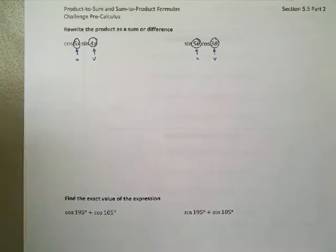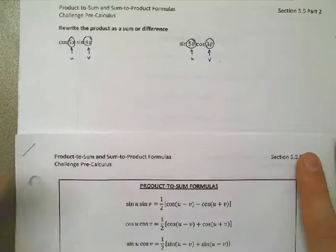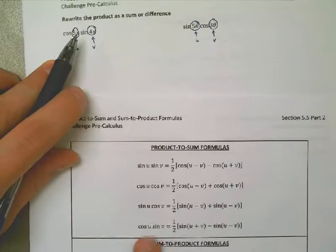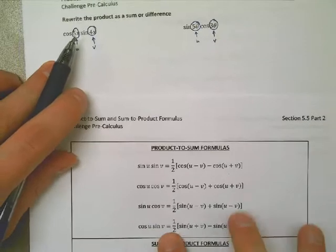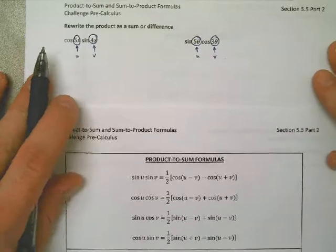I look here and I see I have cosine U sine V. Well, the formula for that is right here, cosine U sine V, so I just need to copy it down, and everywhere I see U, I'm going to put in a 5X. Let's get this straightened out. Everywhere I see a V, I'm going to put in a 4X.